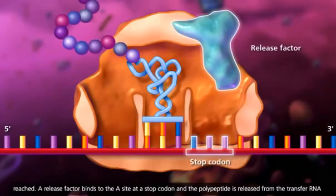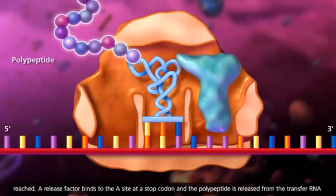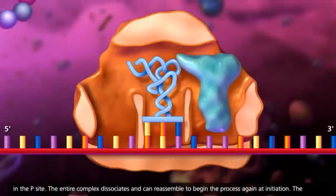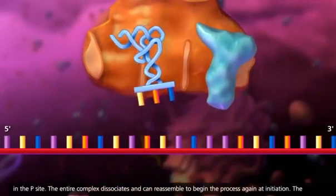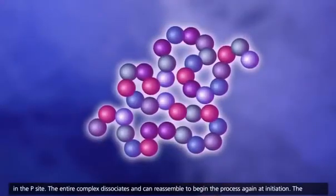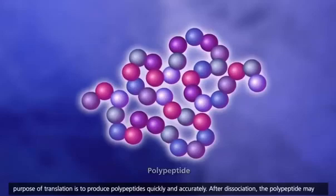A release factor binds to the A site at a stop codon, and the polypeptide is released from the transfer RNA in the P site. The entire complex dissociates and can reassemble to begin the process again at initiation. The purpose of translation is to produce polypeptides quickly and accurately.